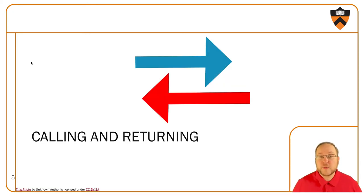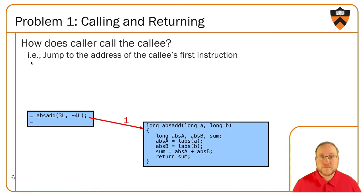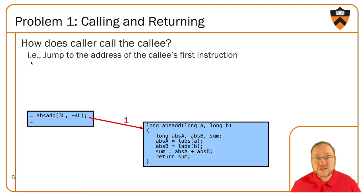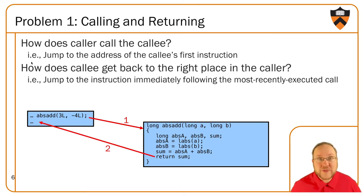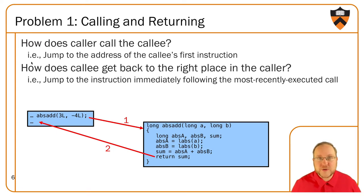Let's consider the problems one at a time, starting with how to call a function and indeed how to get back from that function. The first thing we need to figure out is how to actually stop running at one location in the text section and go start running somewhere else. Then, just as importantly, we need to get back to the place where we made that call once it's complete. Otherwise, we just call our first function and never get back into our own code.